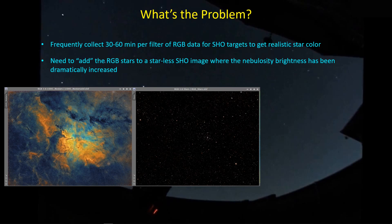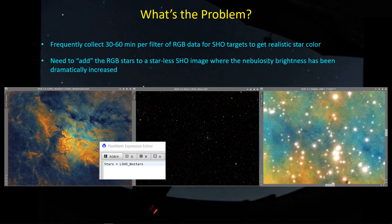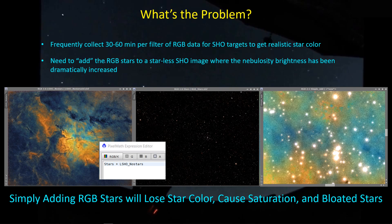The question is how does one go about doing this? What I've been doing is simply adding the stars to the image — using a simple pixel math expression where I take the stars-only image and add it to the starless nebula image. When I do that, I end up with something that looks frankly not at all what I was looking for. All of these stars are white, they tend to be bloated, and in fact they're white because they're saturated. Simply adding RGB stars to an enhanced nebulosity field causes you to lose the calibrated star color, and will likely lead to saturation and bloated stars.